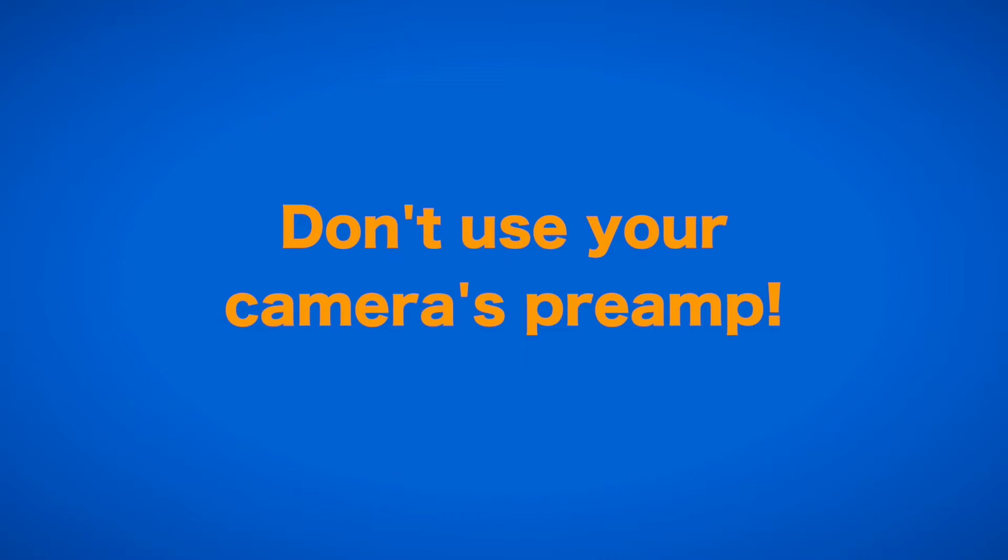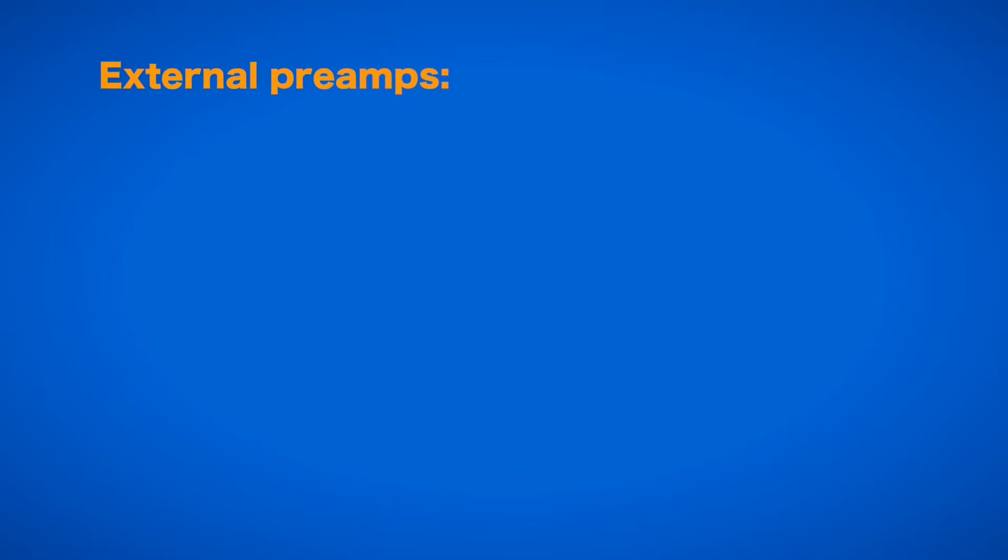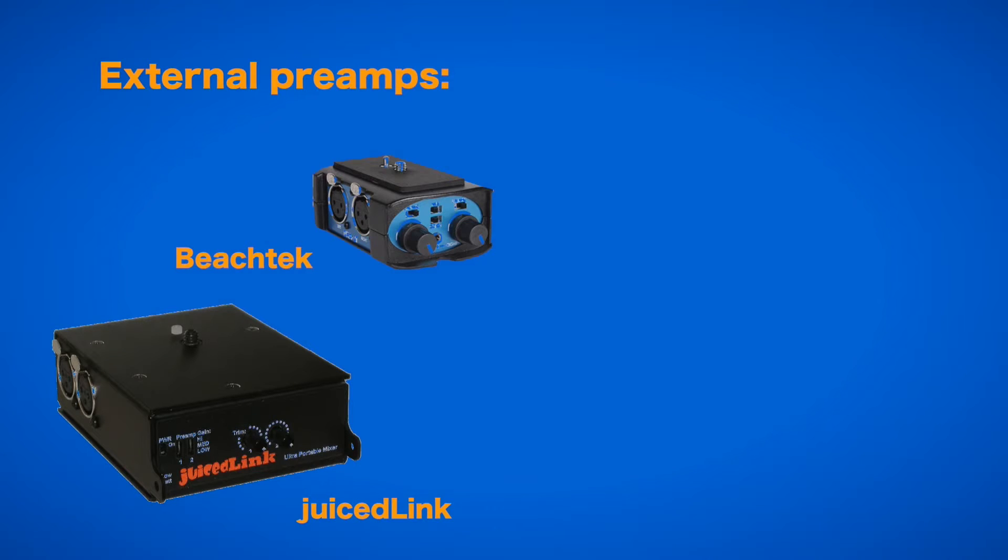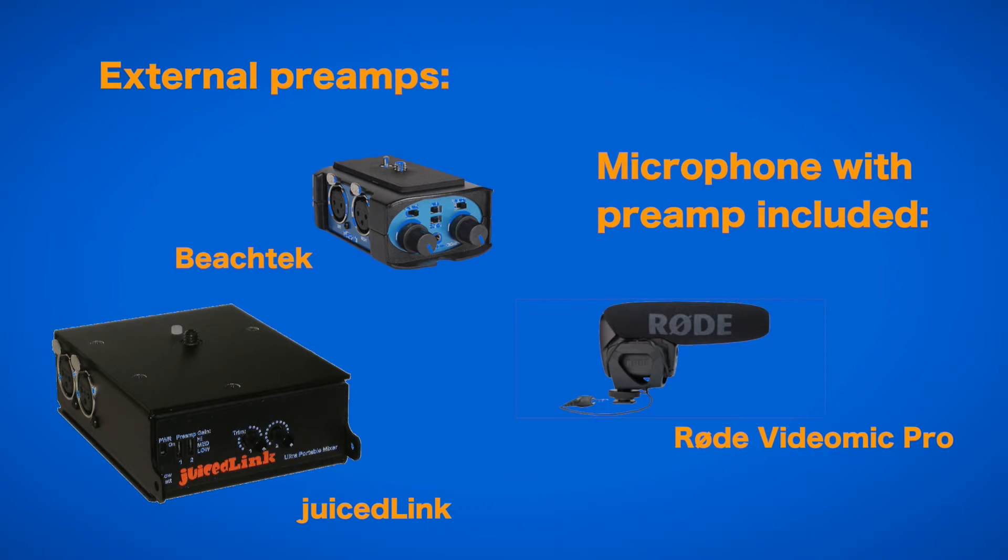This means that if you don't want to use an external audio recorder, it is important to feed a preamplified signal into the camera. This can be done with external preamps, for example by BeechTech or Juicelink, or with a microphone that includes an internal preamp like the Rode VideoMic Pro.